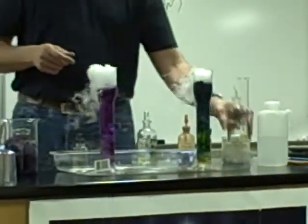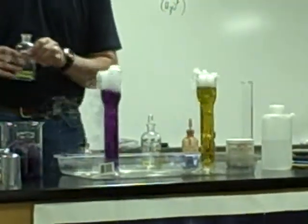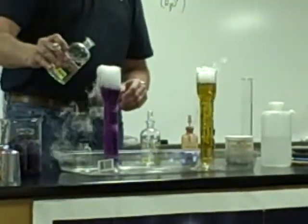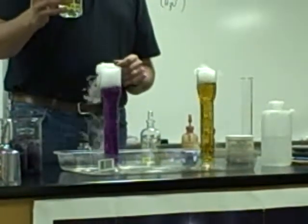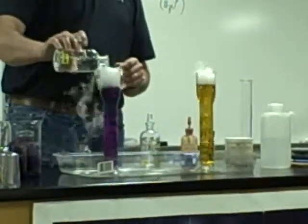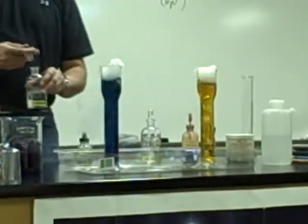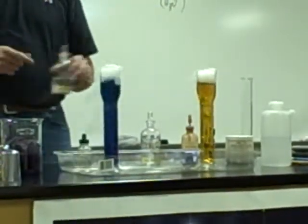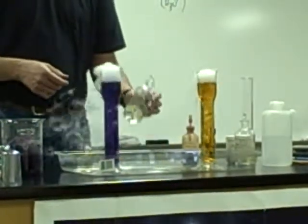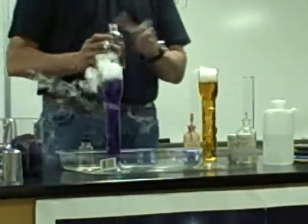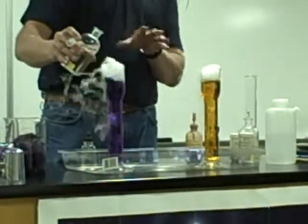Wow, it does! Should I do that back to the cabbage juice? That's so cool. Cabbage juice — what color is it in base? Blue — so we get that tealish color, and then it changes back to dark blue and then back to a purple.